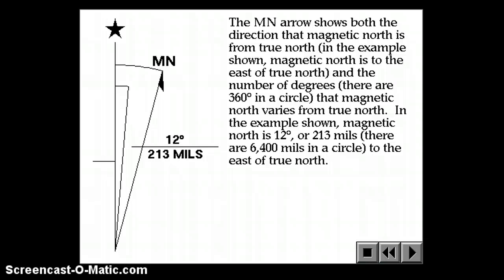The magnetic north arrow shows both the direction that the magnetic north is from true north. In the example, magnetic north is east of true north. It also shows the number of degrees. There's 360 degrees in a circle, and it shows the number of degrees that magnetic north varies from true north. In this example, it is 12 degrees from true north.